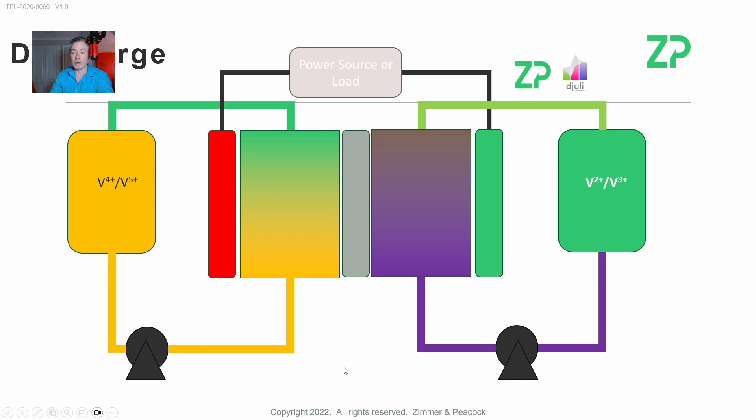What the battery is doing is these pumps are pumping vanadium in different oxidation states into these half cells. In the case of a vanadium redox flow battery, we bring in vanadium two